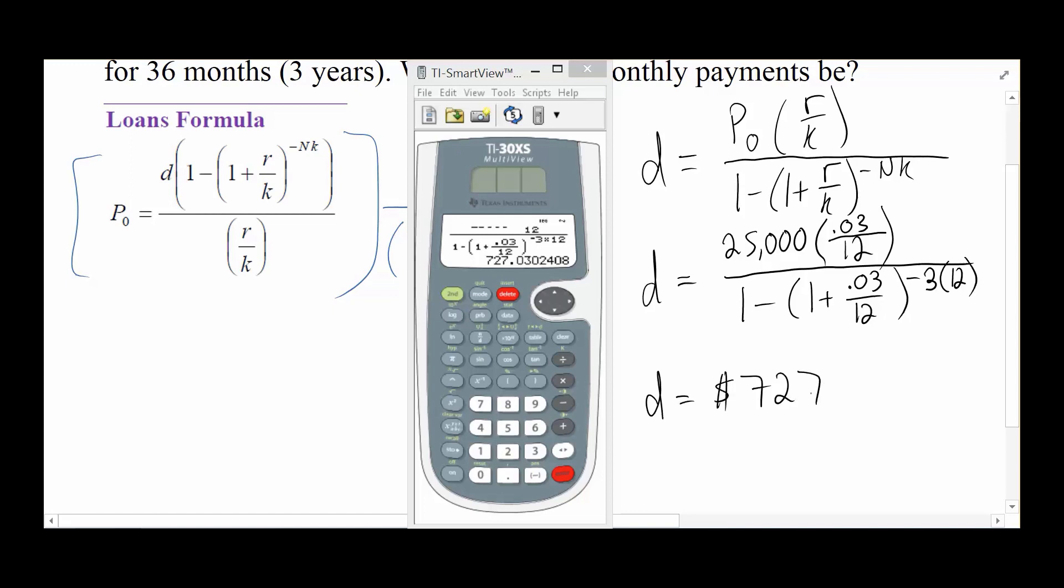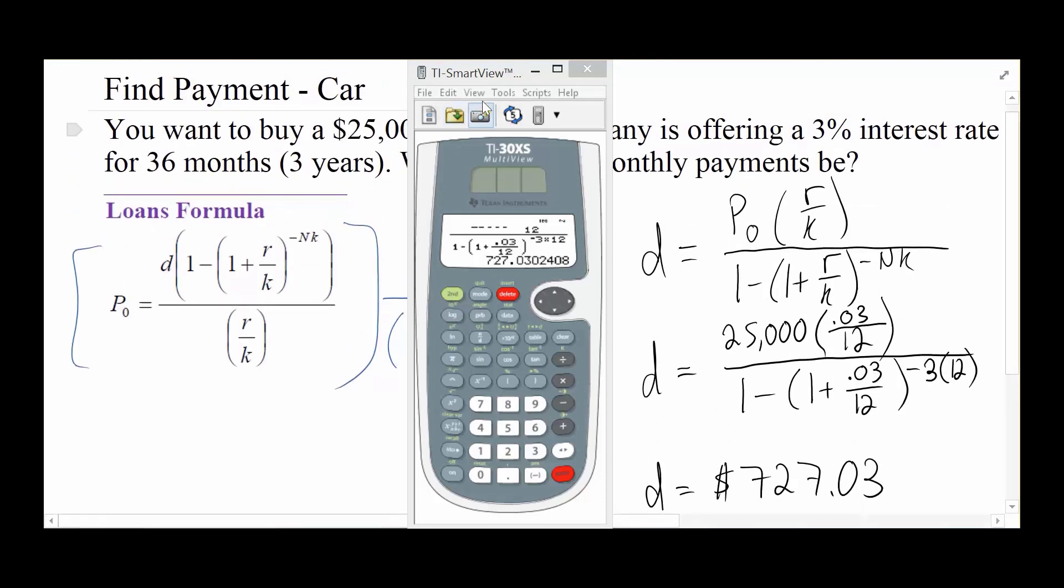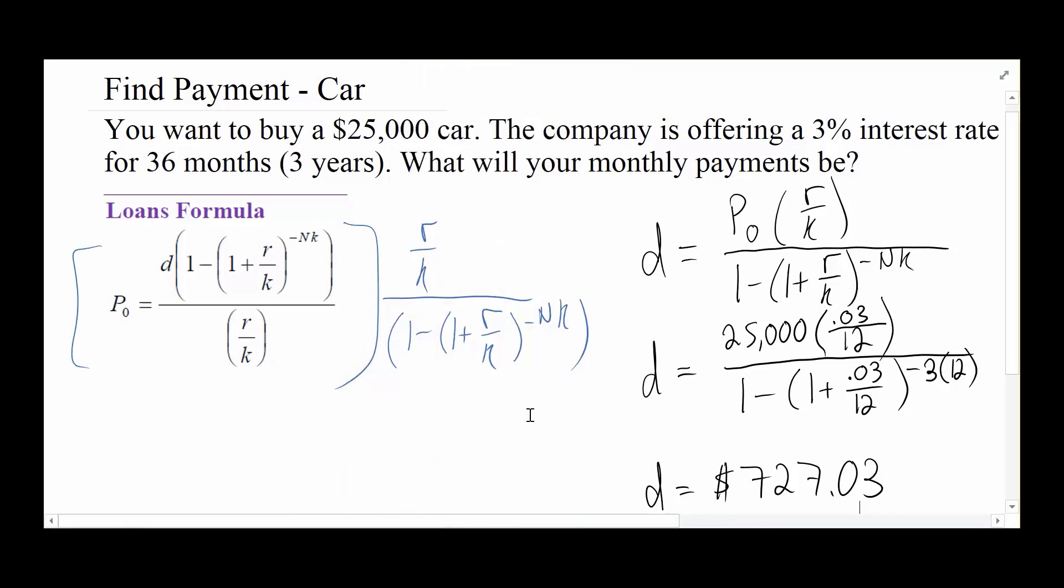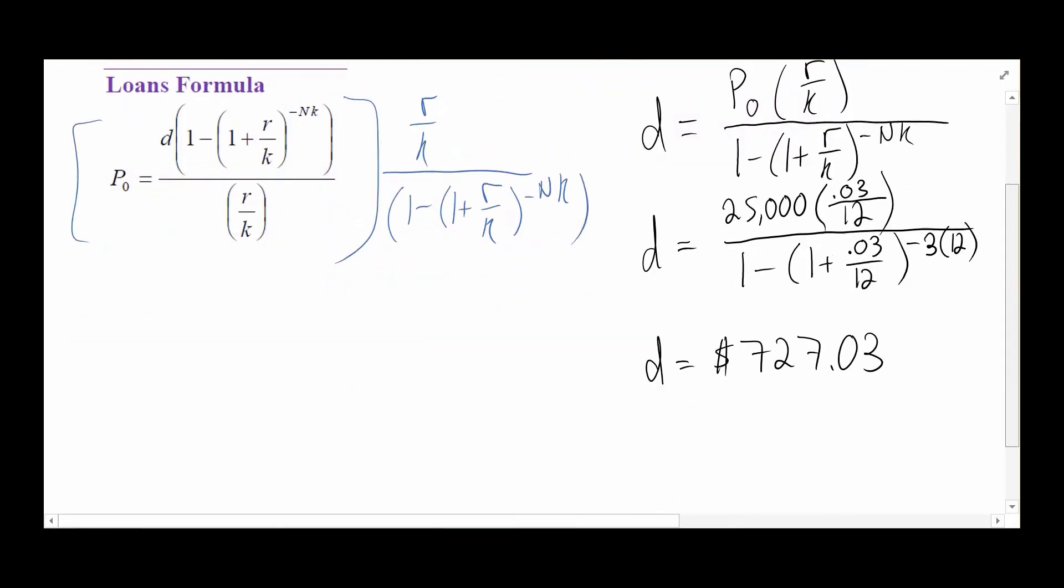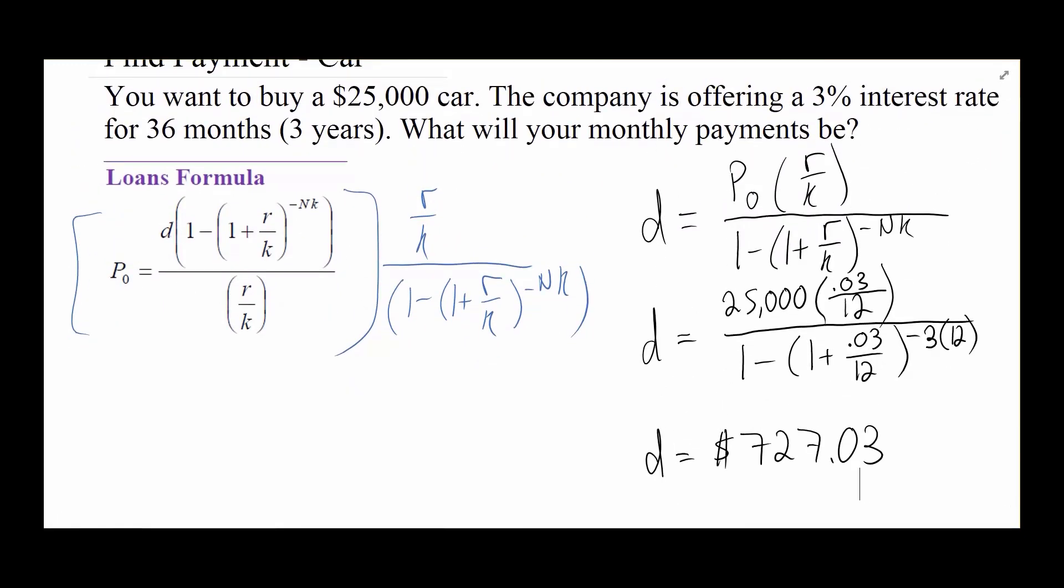On first glance, this might seem like an extremely large car payment for a $25,000 car. Until you go back and look at the fact that this was only a 3-year car payment. If you're used to looking at car payments, you're used to probably 5-year car payments, sometimes 5.5 or 6 years. They even make 7-year car payments. That's how they get your payment down more, but you're paying a lot more in interest then. That's what we could also look at, is how much money are we paying in interest.